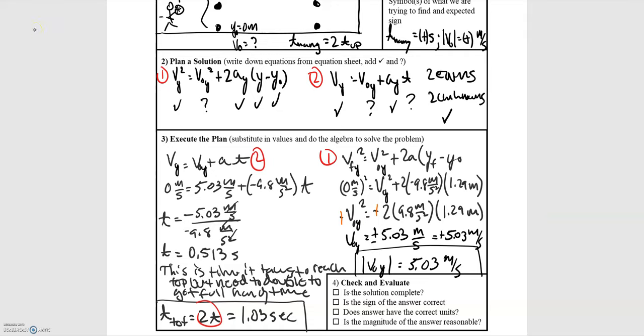Now we need to check our solution just to make sure we didn't make any errors. We found both of the quantities we were looking for. The signs are both positive as we anticipated. We have meters per second for speed and seconds for time, so the units look good, and is the magnitude reasonable? A 1.03 second hang time is probably high for the average person, but since Michael Jordan is a professional athlete, a second seems reasonable for how high he is able to jump. So we can check off that last one.